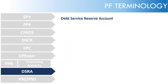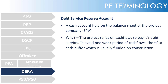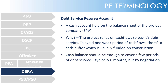DSRA: Debt Service Reserve Account. This is a rainy-day account — a cash account held on the balance sheet of the project company, the SPV. The project relies on its cash flows to pay its debt service, and from a lender's perspective, to avoid a weak period of cash flows, there needs to be a cash buffer, which is usually funded at construction. The cash balance should be enough to cover a few periods of debt service, typically six months, but this is all by negotiation.